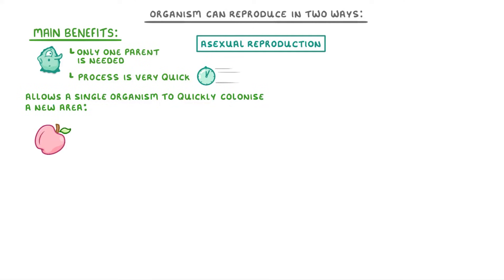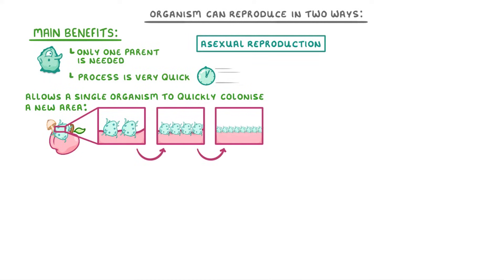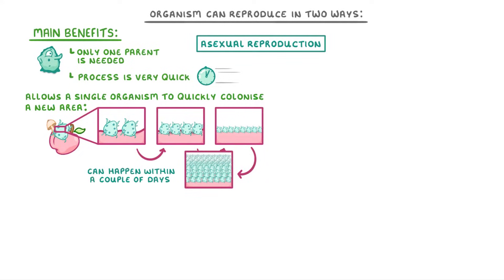For example, if you had a piece of food and a single bacteria or fungi landed on it, it could reproduce into two, then four, then eight, and so on until it forms a whole colony. And if the conditions are right, this can happen within just a couple of days.